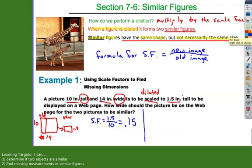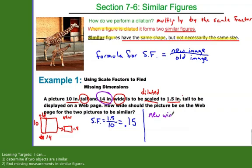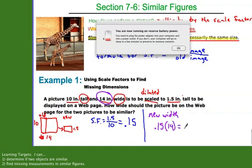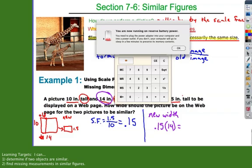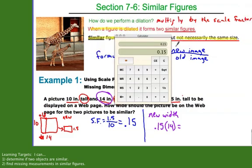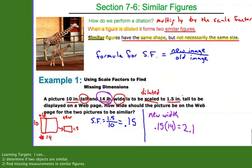Well, then how do I use this to answer this question? How wide should the picture be on the webpage? Well, remember, scale factor, I multiply everything by 0.15. So I have this 14-inch width right here. So all I need to do with my scale factor then is take that 14 inches, multiply it by 0.15, just like I multiplied the 10 by 0.15. So for the new width, I'm going to take 0.15 times 14. Do that on the calculator. 0.15 times 14, and that gives me 2.1.